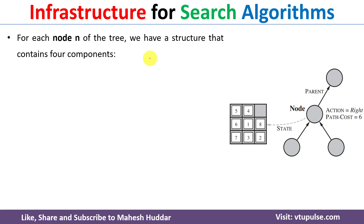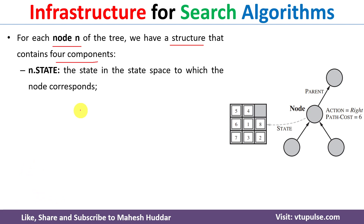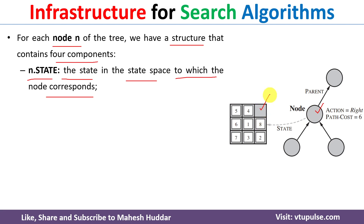Let us assume that we want to represent a node n. That can be done with the help of a structure which contains four components. The first component is n.state, which is the state in the state space to which the node corresponds. For example, in the eight-puzzle problem there are multiple states, and at this particular point of time this node is pointing to this particular state.